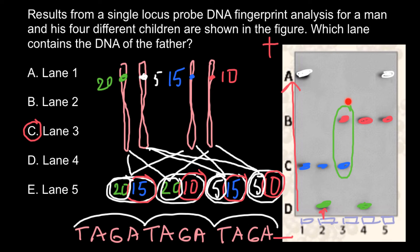So the only correct answer here would be answer C. Line three represents the father, and lines one, two, four, and five represent the four children. And this is all for today — thank you for your attention. Please subscribe for my new videos, thumbs up if you like this video, please write your comments and questions if you have any, and see you in the next video. Goodbye!